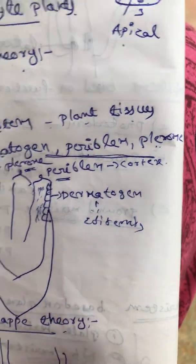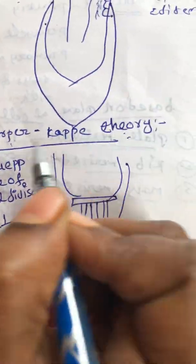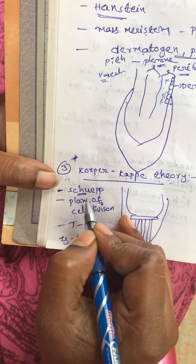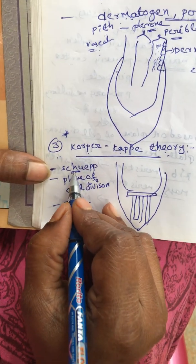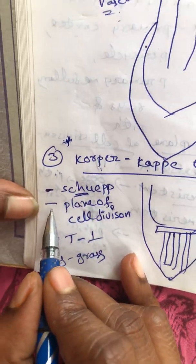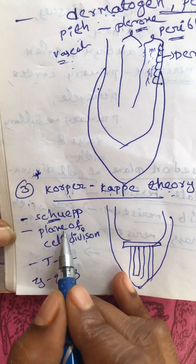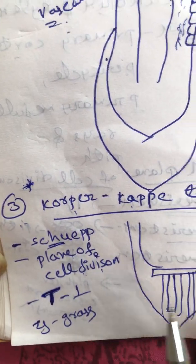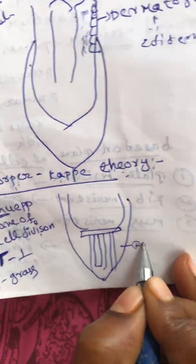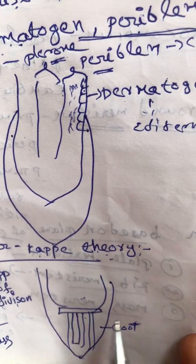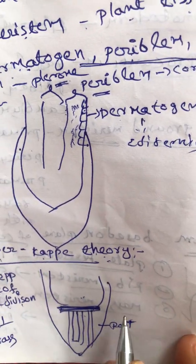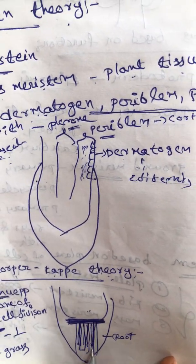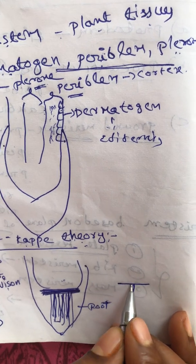The third one is Korper-Kappe theory. This is the most important theory. Korper-Kappe theory is proposed and explained by Schoop. Here, plane of cell division mainly occurs - the divisions look like T-shaped divisions. This T-shape means the root cap area is the outermost region where first divisions occur, then later divisions occur longitudinally.